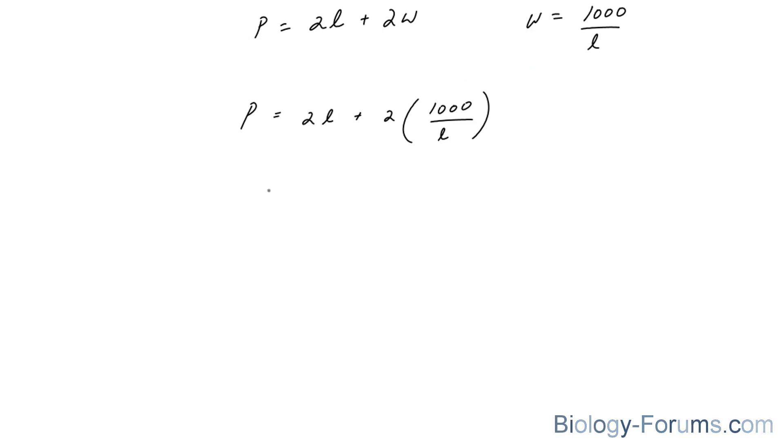The derivative of 2L is equal to 2, and I'm going to multiply this out. If I do that, I end up with 2,000 over L.